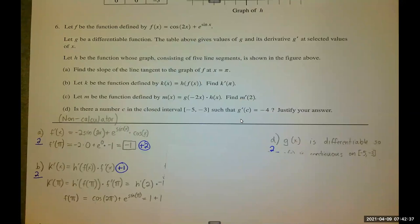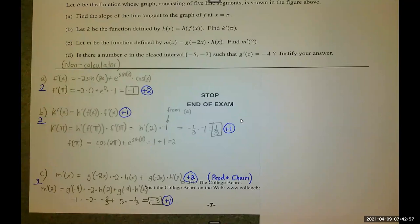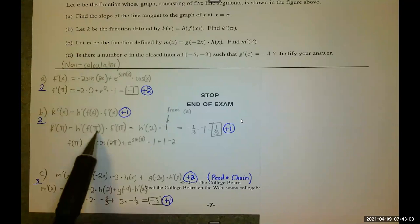Part B and part C are very similar. They just have different functions. In part B, we want to find K prime of pi. In part C, we want to find M prime of two. In part B, we need to use the chain rule. It gives us H prime of F times F prime. We evaluate at pi. So we need F of pi and F prime of pi.